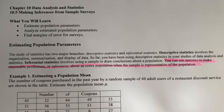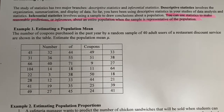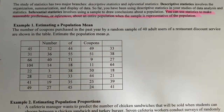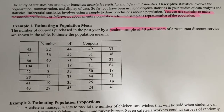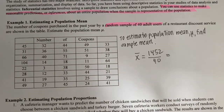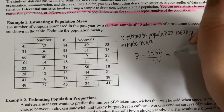For example one, we're going to start off by estimating a population mean. This table here shows the number of coupons purchased by a random sample of 40 adult users of a restaurant discount service. We're going to estimate the population mean. Because this is a random sample, this sample is representative of the population, and we can use the sample mean to estimate the population mean. Adding up all the data values, you'll get 1,452, and you're going to divide it by the size of the sample, which is 40, and this will give you 36.3.